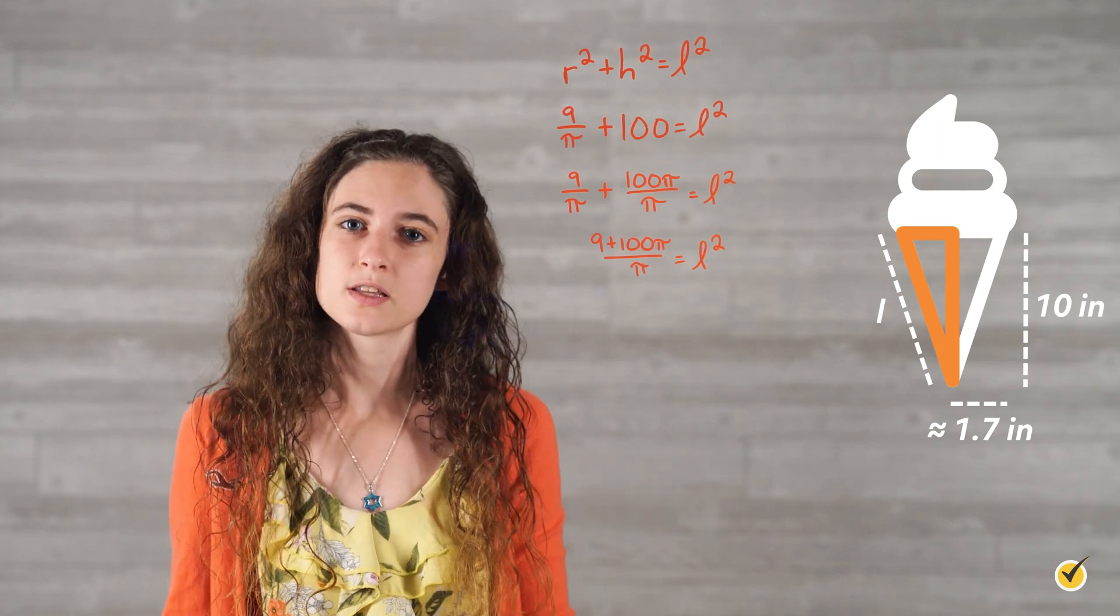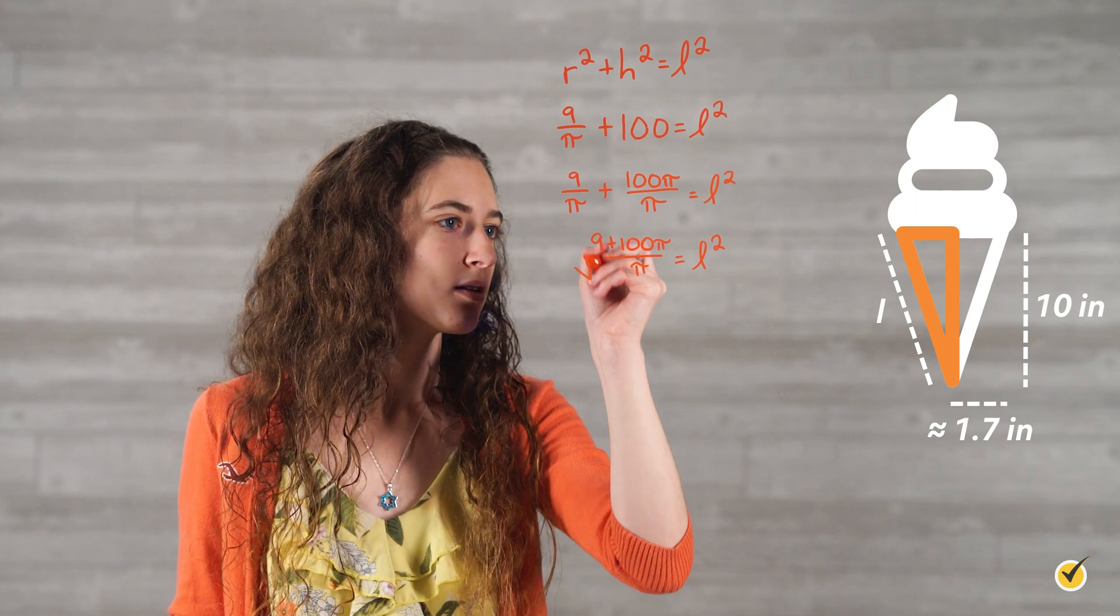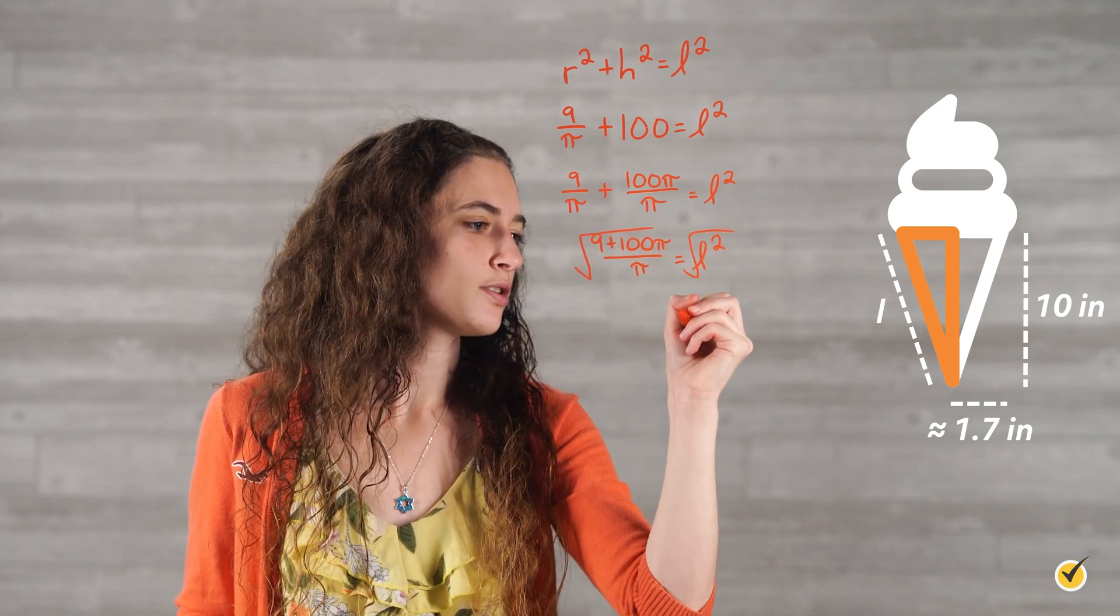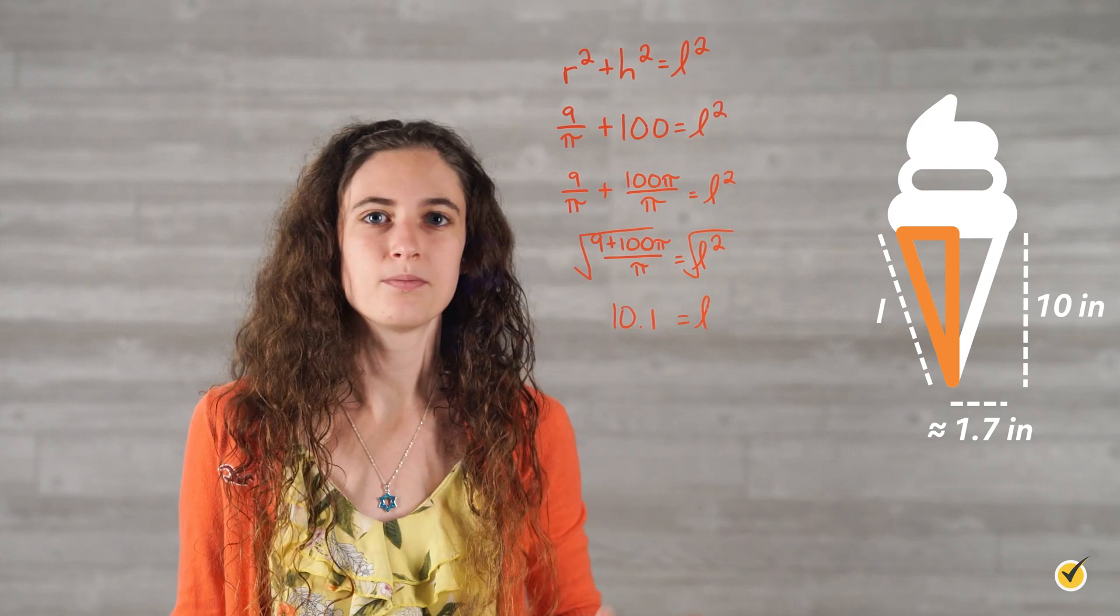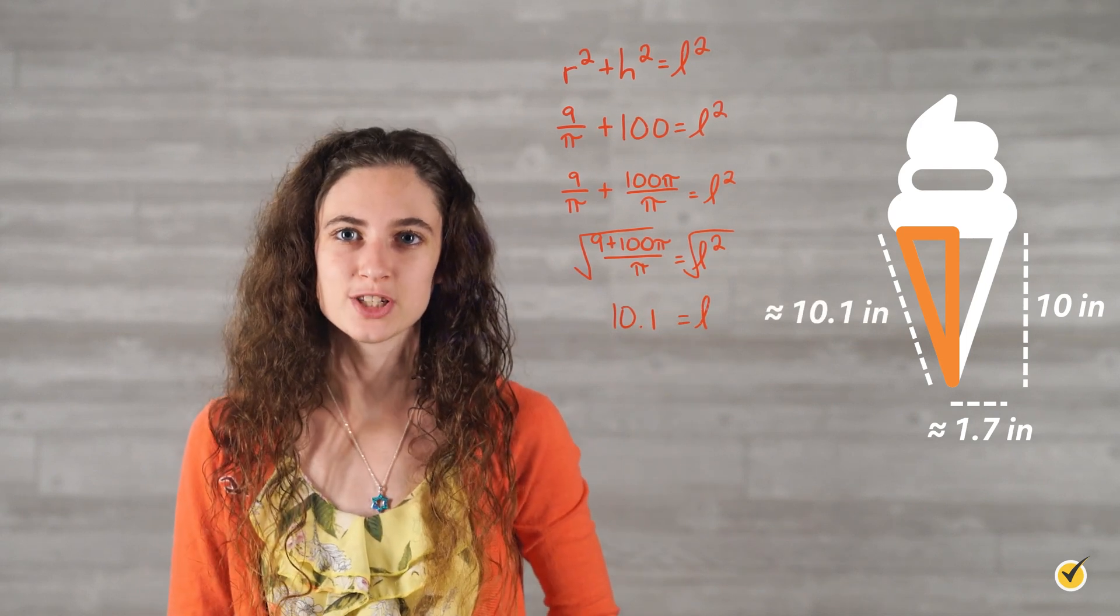Now, all that we have to do is take the square root of both sides. When we do this, we get that l is approximately 10.1. So, our slant height is approximately 10.1 inches.